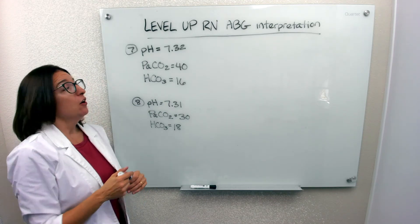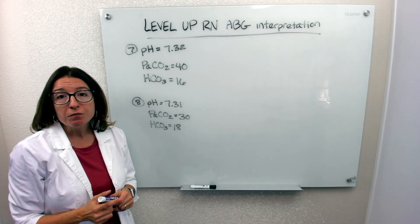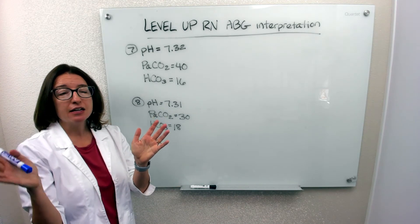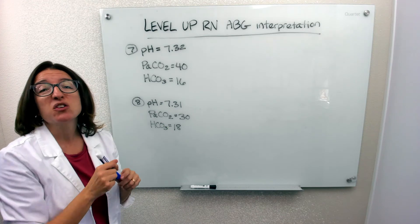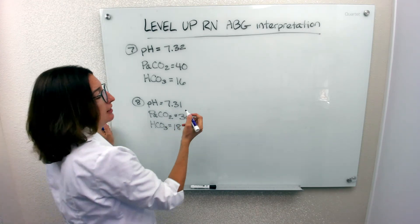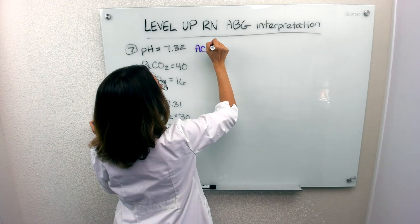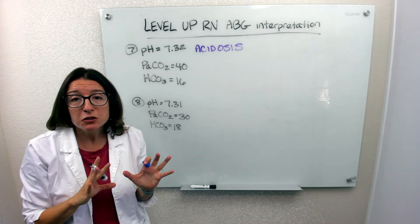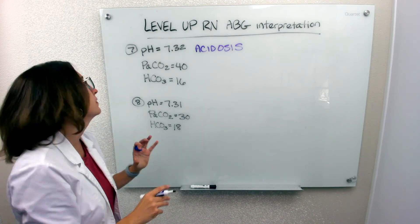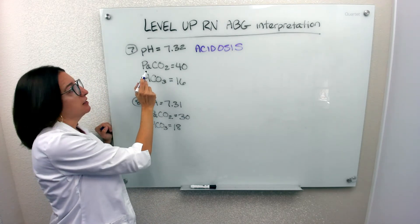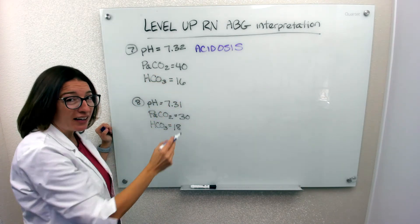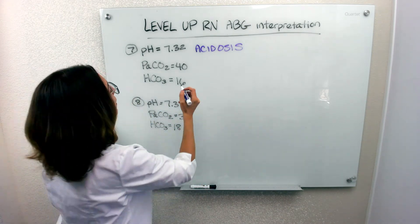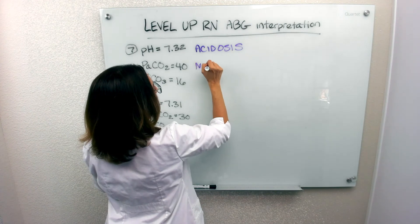Number seven: we have a pH of 7.32, which is out of range on the low side — our range is 7.35 to 7.45 — so we know we have acidosis. Now we need to see who to blame: the respiratory system or the metabolic system. PaCO2 is 40, which is in the normal range of 35 to 45, so we have a normal respiratory system.